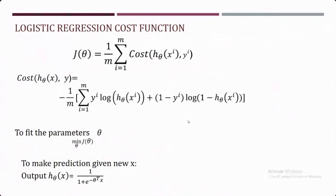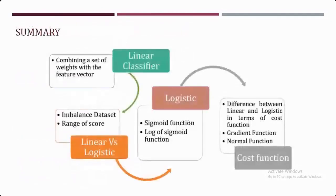In the last class, we covered classification algorithms. First, we started with the linear classifier — the intuition being that it performs prediction based on the combination of your weight and feature vector. Next, we saw why we can't use linear regression for direct classification. The first problem is that the score calculated from coefficients and features could cross the boundary, making it difficult to set one threshold for prediction.